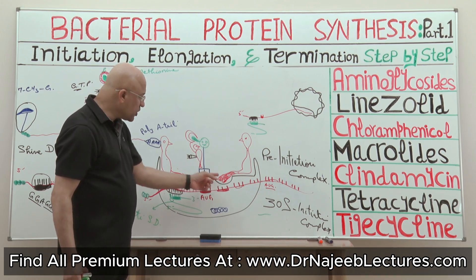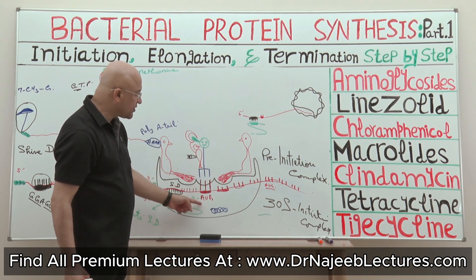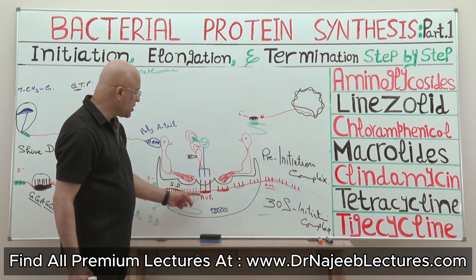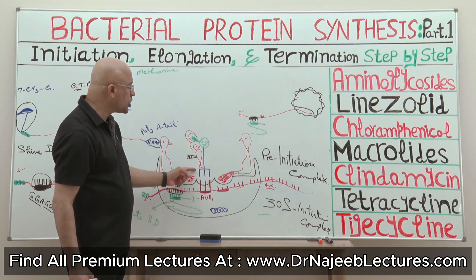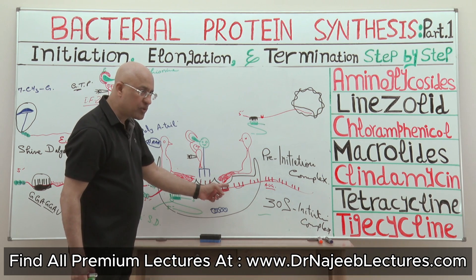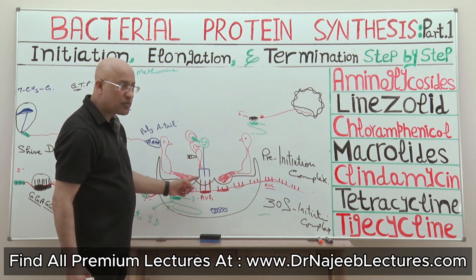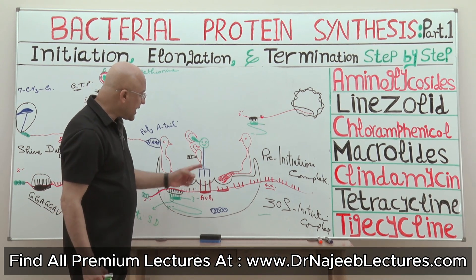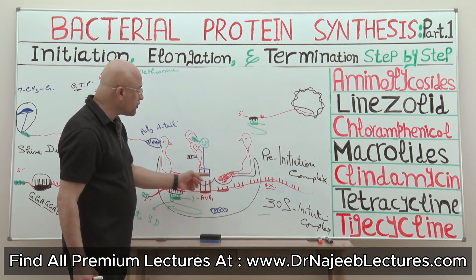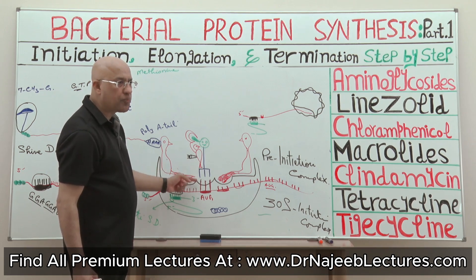They also push the initiator transfer RNA in such a way towards the start codon that the initiator transfer RNA cannot be misplaced at the aminoacyl binding pocket or E pocket — it has only the chance to bind at the P site. Another function is they proofread that the start codon and initiator transfer RNA anticodon are properly matching.